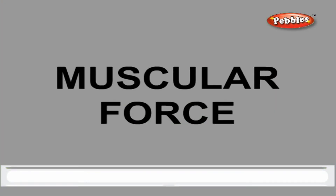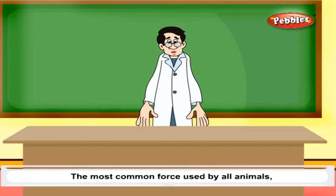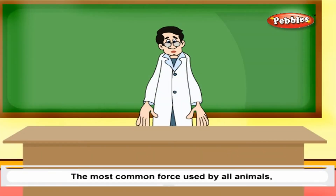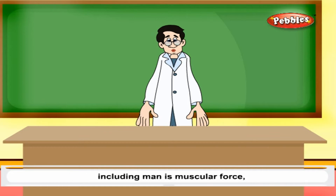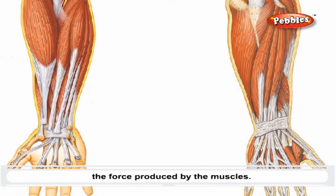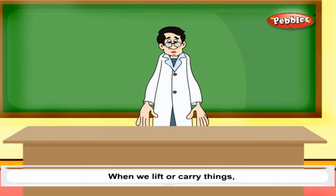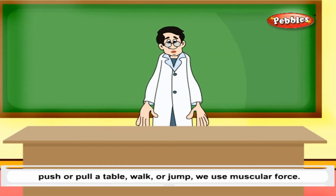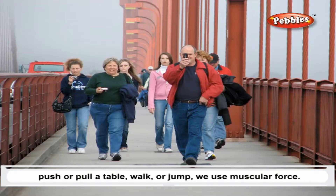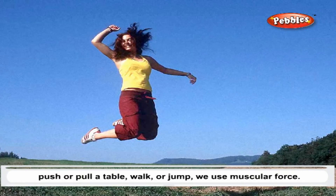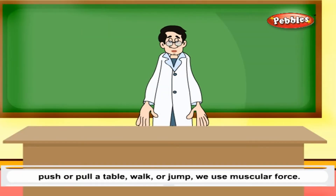Muscular Force: The most common force used by all animals, including man, is muscular force — the force produced by the muscles. When we lift or carry things, push or pull a table, walk or jump, we use muscular force.